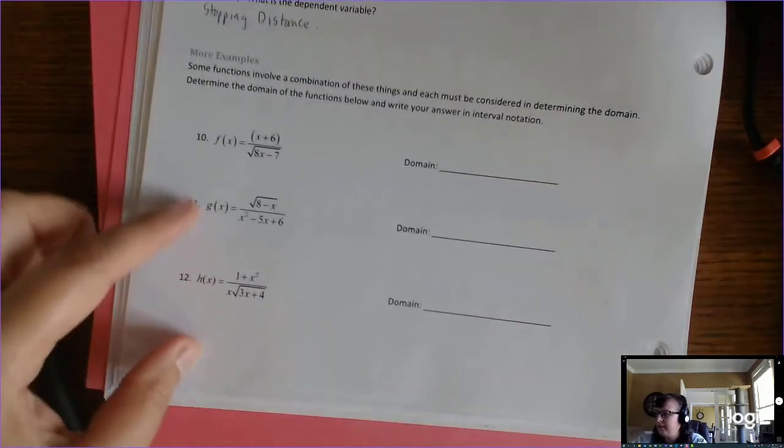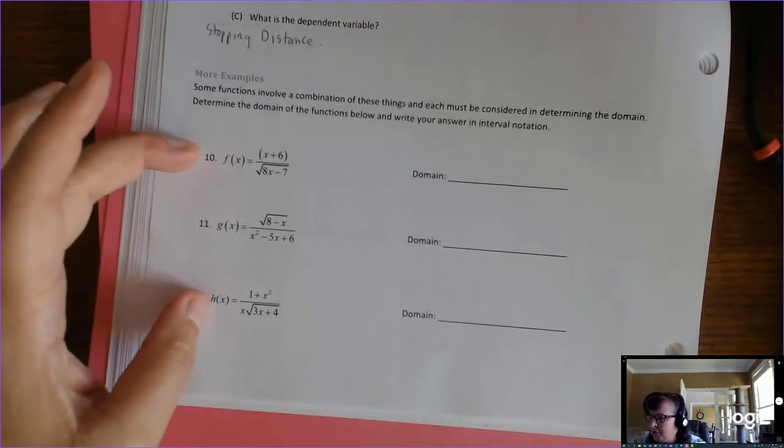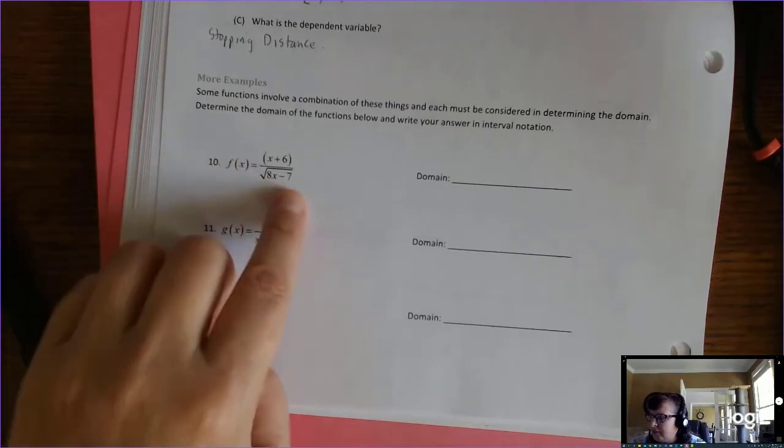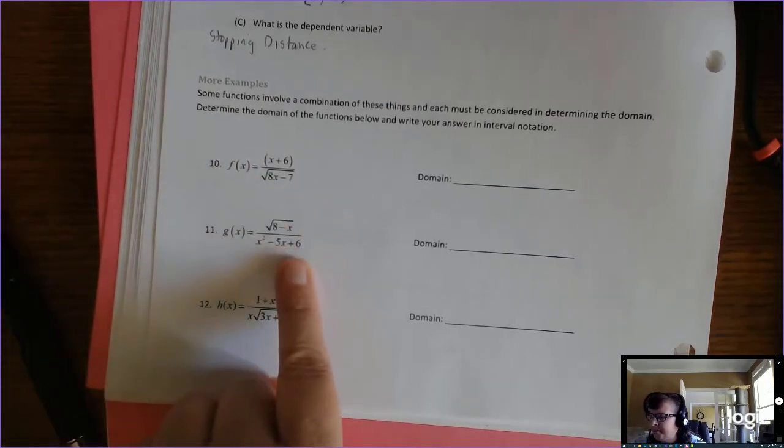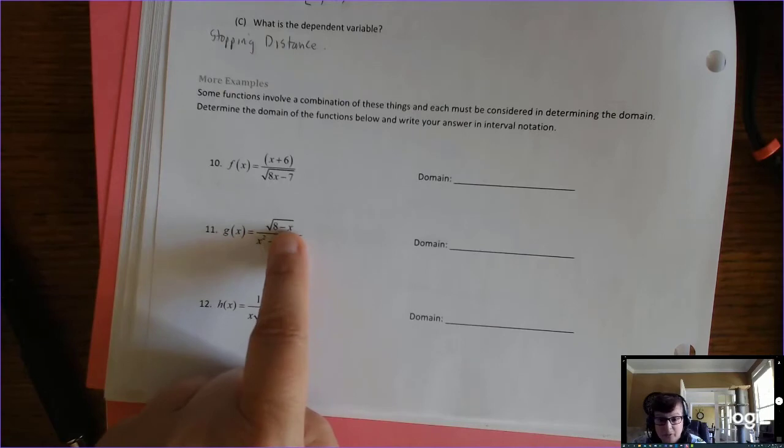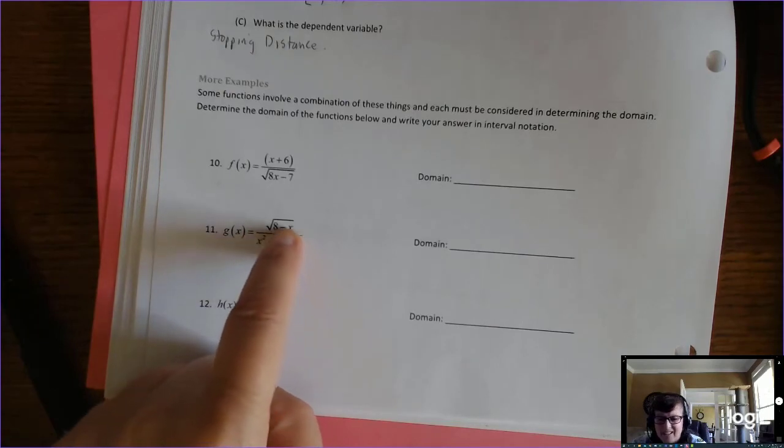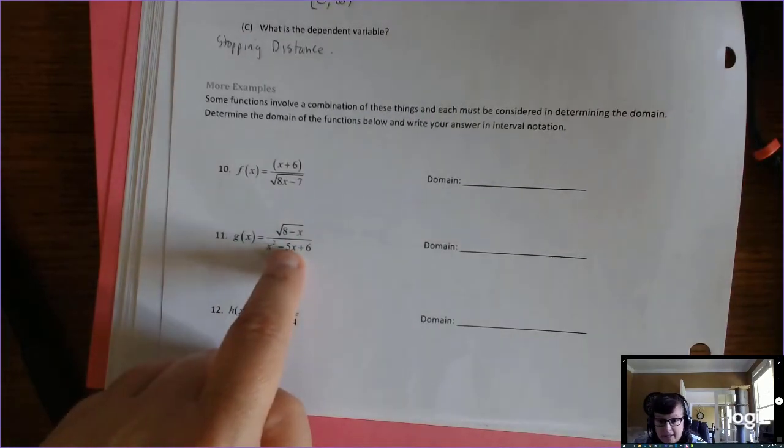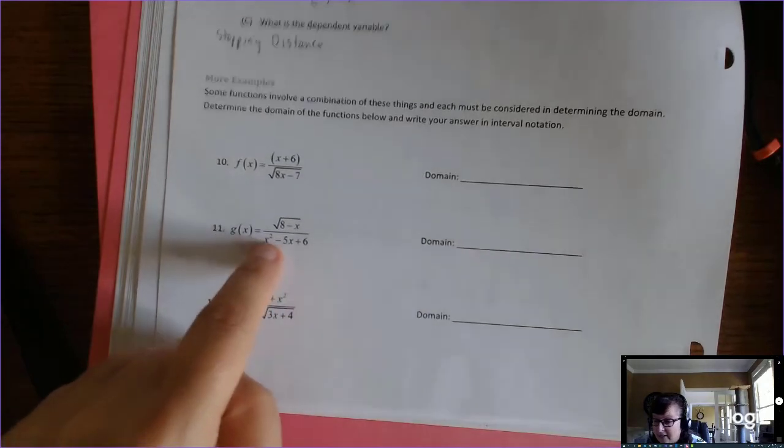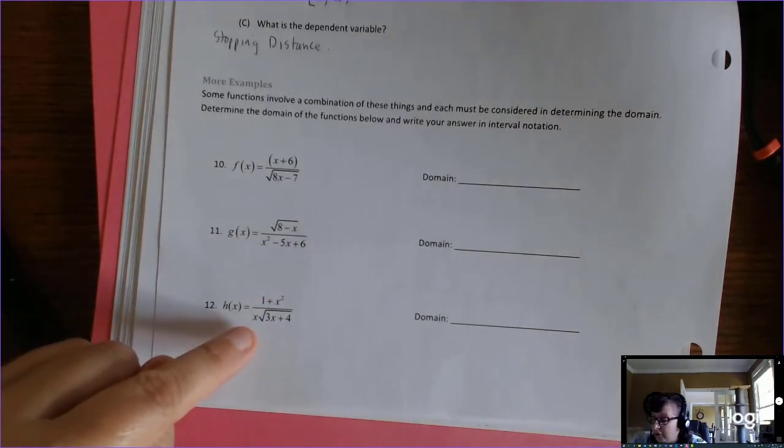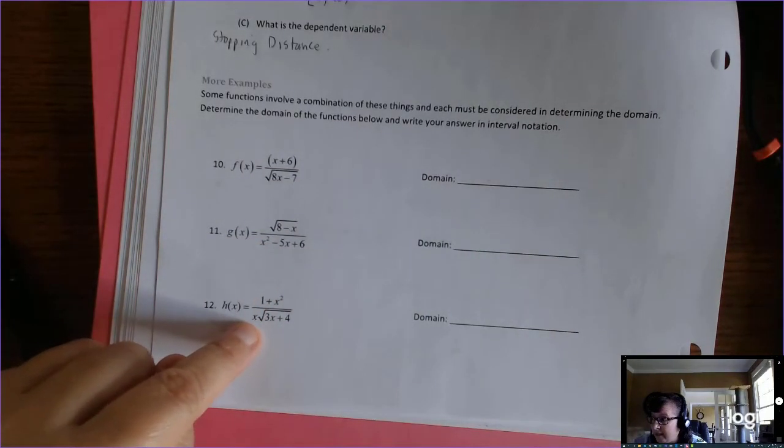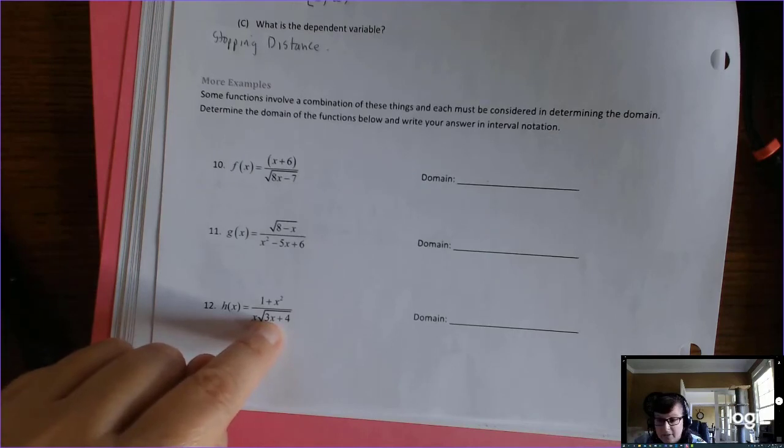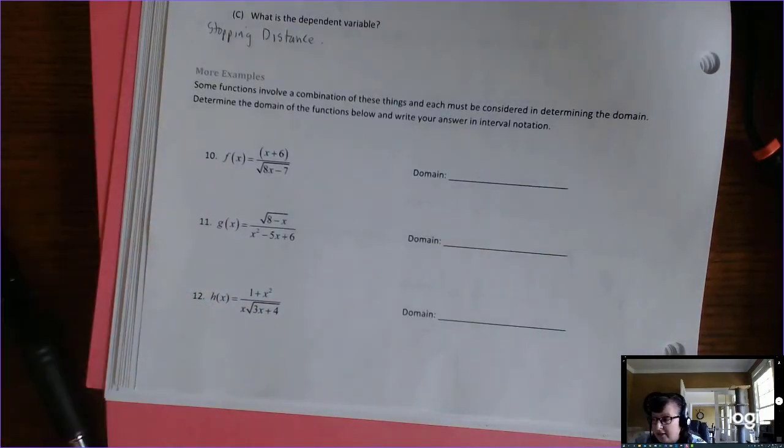All right. And then the last three, this tells me if you really know what you're doing. Because there's a lot going on. You've got a radical in the denominator here. You have a radical in the numerator. It's not a problem that the radical's in the numerator. It's a problem that it's a radical. You have to go back and look at your notes. You have a quadratic. Can you factor that? Here, you have an x times a radical. Okay. So, try these and check the key and see if you can do those.